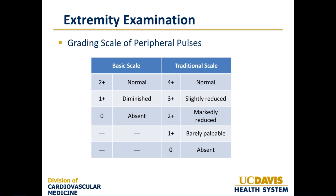For grading peripheral pulses, we have a basic scale and a traditional scale. The basic scale: 2+ is normal, 1+ is diminished, and 0 is absent. The more sophisticated traditional scale used by vascular surgeons grades pulses as 4+ for normal, 3+ for slightly reduced, 2+ for markedly reduced, 1+ for barely palpable, and 0 for absent.